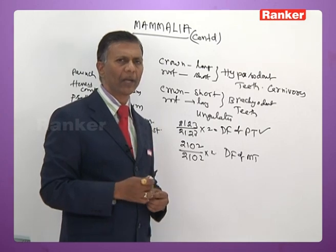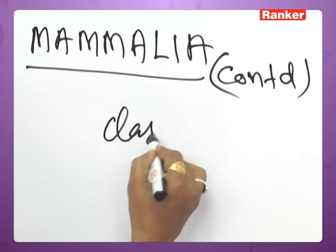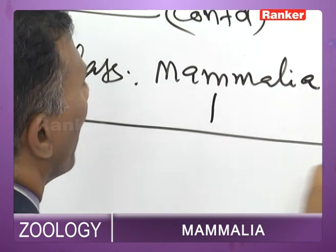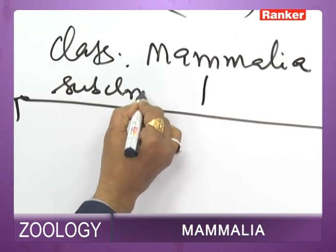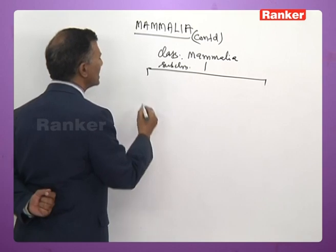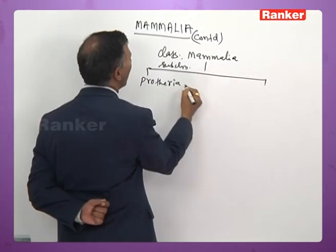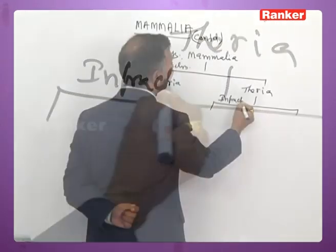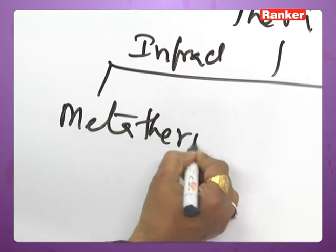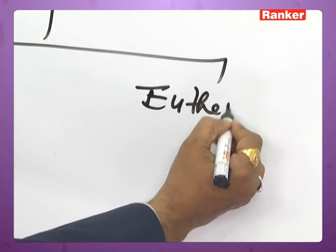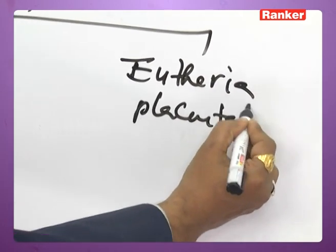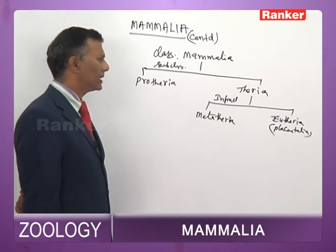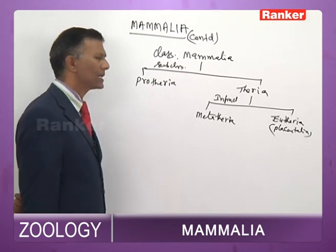Now we shall talk about the classification of Mammalia. Class Mammalia is divided into two subclasses: Subclass Prototheria and Subclass Theria. Subclass Theria is divided into two infraclasses: Infraclass Metatheria and Infraclass Eutheria, or Placentaria.